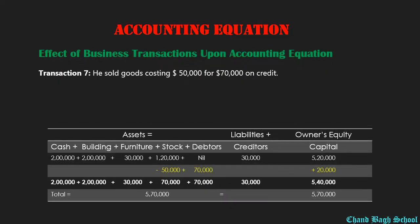Here is another transaction: Mr. Chima sold goods costing $50,000 for $70,000 on credit. The business owner earned $70,000 from this sale, but the cost of goods was $50,000. Since the sale is on a credit basis, we examine the effect on the accounting equation. The goods sold had a cost of $50,000, meaning $50,000 is reduced from our stock.